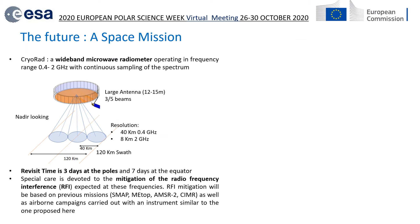Thanks to these interesting results, we now propose to move this concept to space. Here is a possible solution for developing this wideband microwave radiometer as a space mission, with a large antenna of about 12–15 meters and a resolution on the ground from 8 to 40 kilometers depending on frequency. With this capability, we have a revisit time of 3 days at the poles and 7 days at the equator.